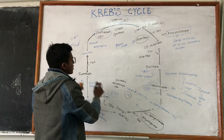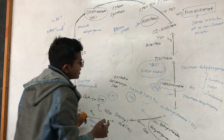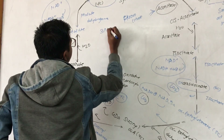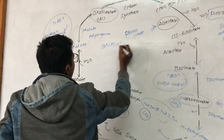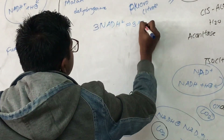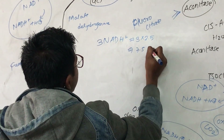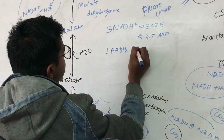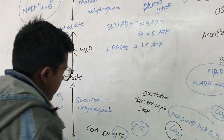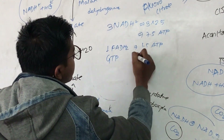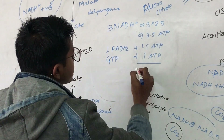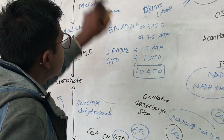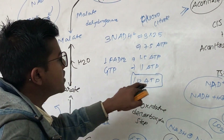We can calculate the energy generated: 3 molecules of NADH are produced, and each NADH yields 2.5 ATP, giving 7.5 ATP. One molecule of FADH2 gives 1.5 ATP. And 1 GTP is produced via substrate level phosphorylation. So the Krebs Cycle is associated with the generation of 10 ATP per turn according to the new concept.